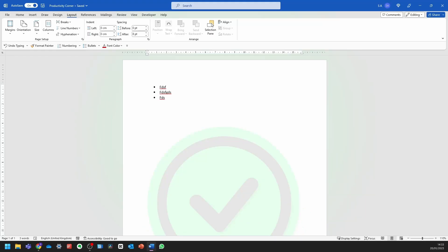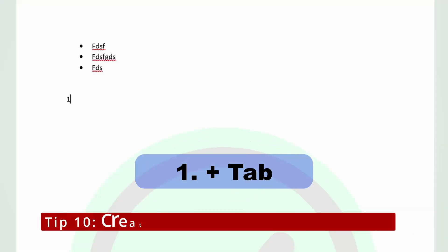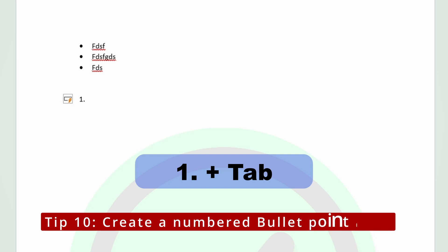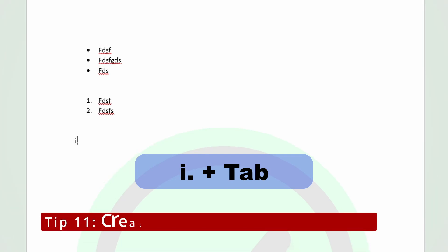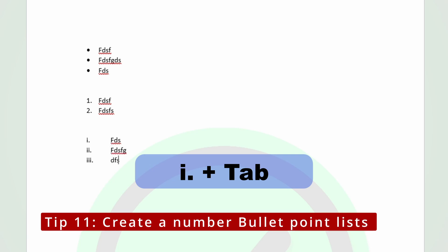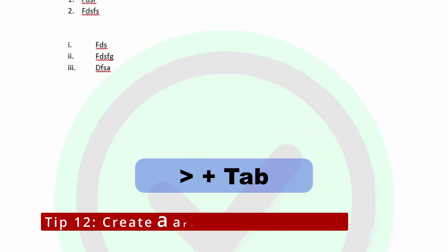You can also use this for other types of bullet points. For instance, one dot tab, it should create a numbered bullet point. And you can also create ones with a greater than sign as well.